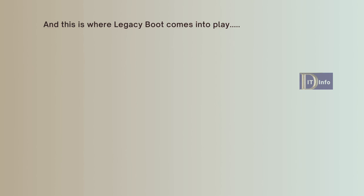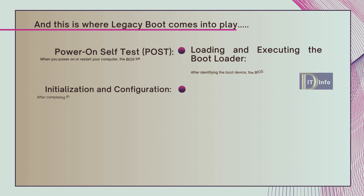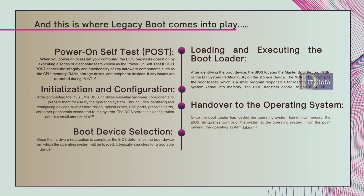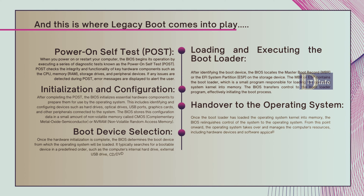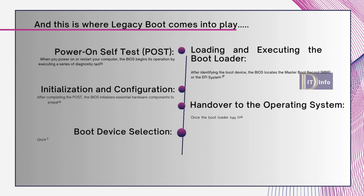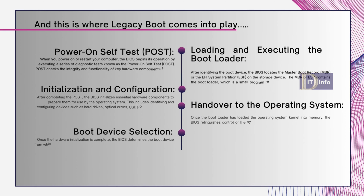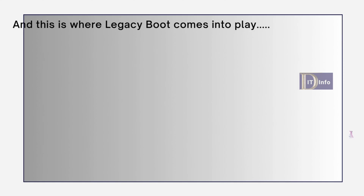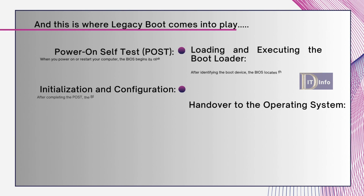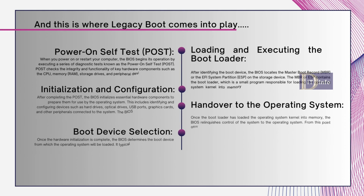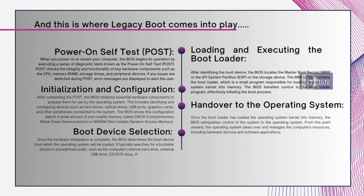Next, BIOS searches for the boot device — usually a hard drive or SSD — where the operating system is installed. Once it finds the boot device, BIOS loads the first sector of the storage device, known as the Master Boot Record (MBR), into memory. This is where legacy boot comes into play. In legacy boot, the boot process continues with the MBR containing a bootloader, such as GRUB for Linux or NTLDR for Windows.